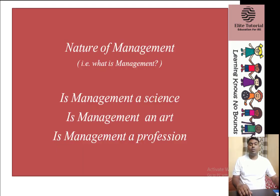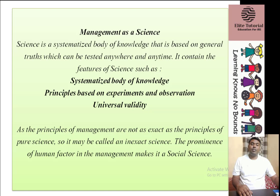Now the next topic is the Nature of Management — what is Management? Is management a Science, an Art, or a Profession? Science is a systematic body of knowledge based on general truths which can be tested anywhere and anytime. It contains features such as a systematic body of knowledge, principles based on experiments and observations, and universal validity. As the principles of management are not as exact as pure science, it may be called an inexact science. The prominence of the human factor in management makes it a social science.